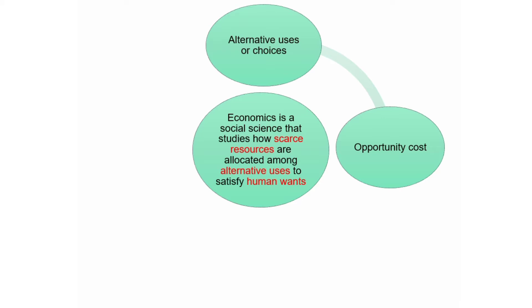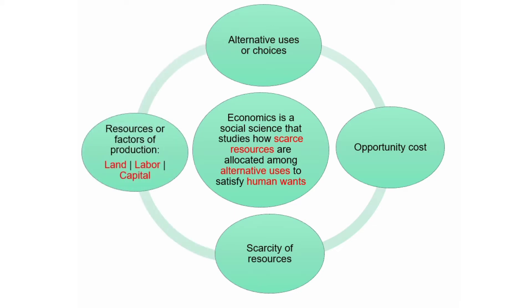Another idea that we need to understand about economics is that resources are scarce, or resources are limited. Resources or factors of production such as land, labor, and capital as well as entrepreneurial skills are limited. For example, in a piece of land where a building is constructed, you cannot plant rice on it. You cannot wash your clothes and sleep at the same time. Because resources are scarce, we have to make a choice or decision.